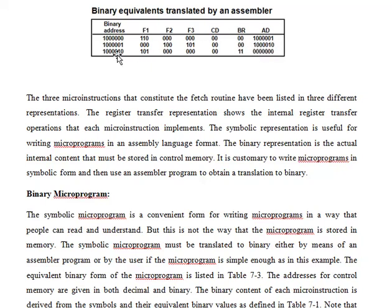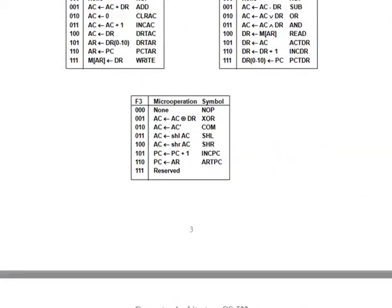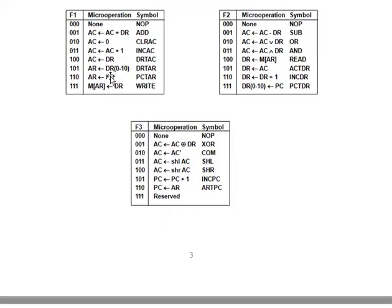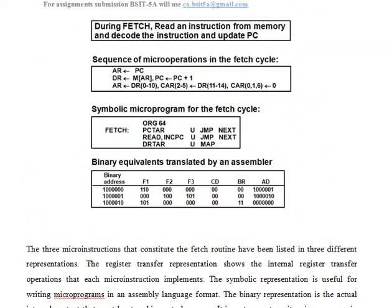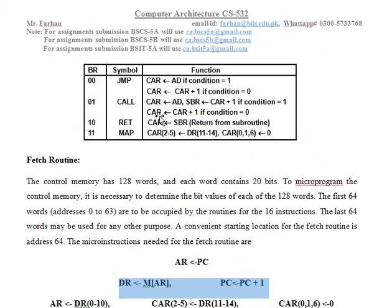The third micro instruction also proceeds to the next line — the condition is true or false, we go to the next line. Here F1 value is 101 and F2 and F3 are all 0. F1 = 101 means we load DR, so the operand address goes into AR so we can do further operations; the others are none. Interestingly, BR value is 11 and CD value is 00. BR = 11 means we perform a mapping operation — we go to the new instruction routine. That is the procedure we have already seen.